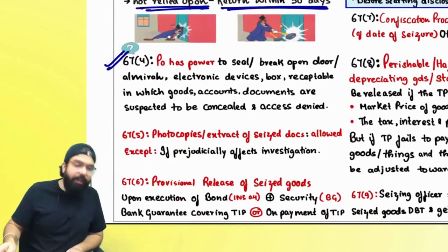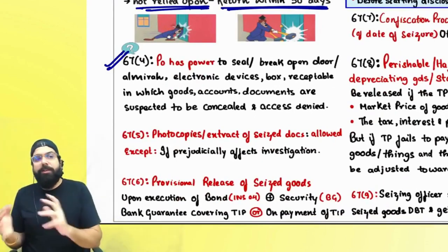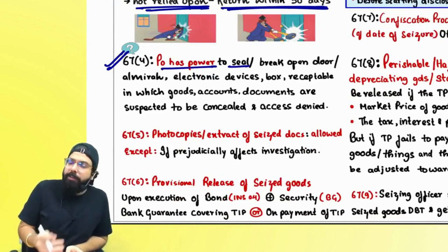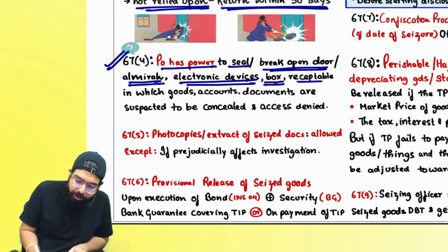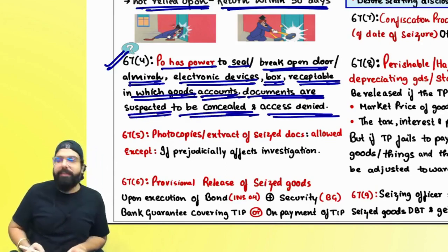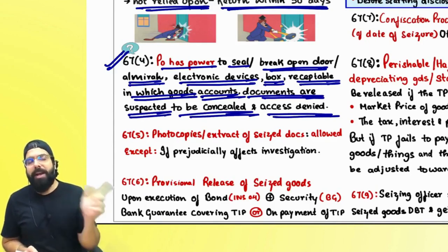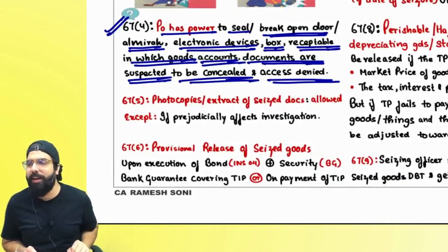Section 67(4) talks about the powers of the officer during a search and seizure activity. The proper officer has the power to seal the premises, seal anything, or break open the door, almirah, electronic device, or boxes or receptacles in which books, accounts, and documents are suspected to be concealed and access is denied. If you deny access, they will break open everything and take out those goods, documents, and things.